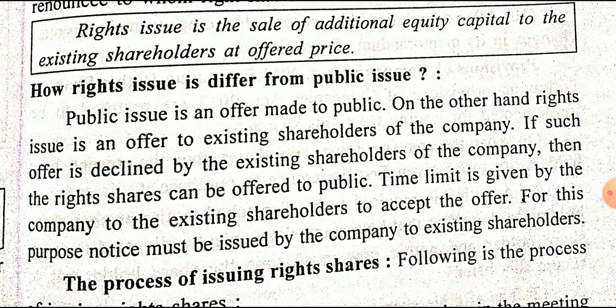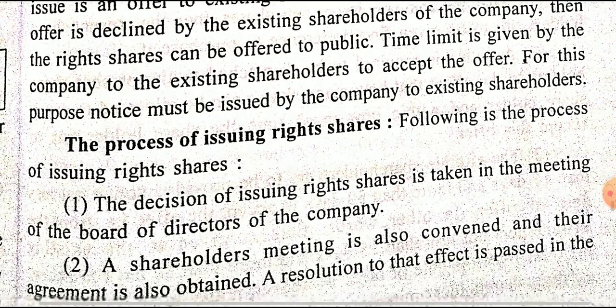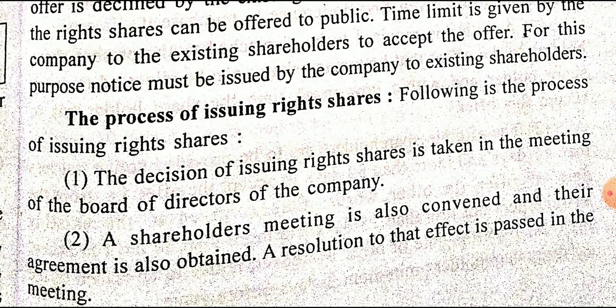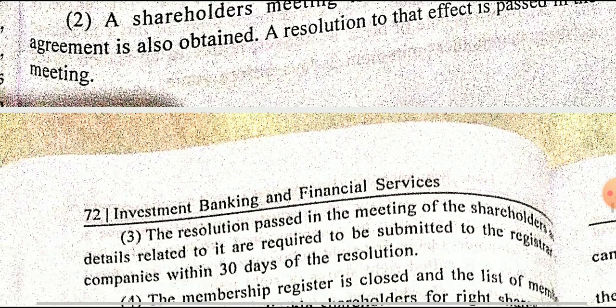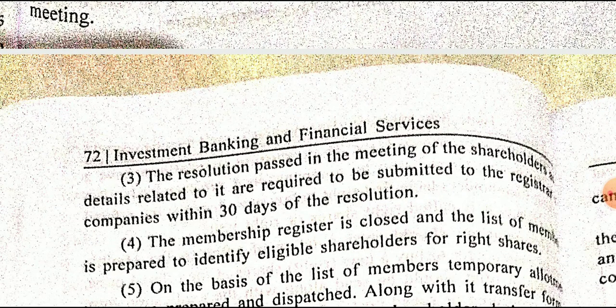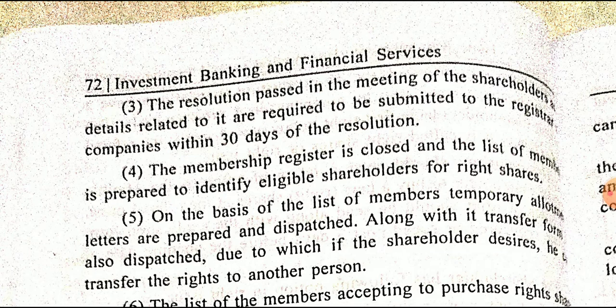For this purpose, a notice must be issued. The process of the right issue: the decision to issue right shares is taken in a meeting of the board of directors. A simple resolution must be passed in the board of directors' meeting. The resolution passed in the shareholder meeting details must be submitted to the registrar of the company within 13 days.